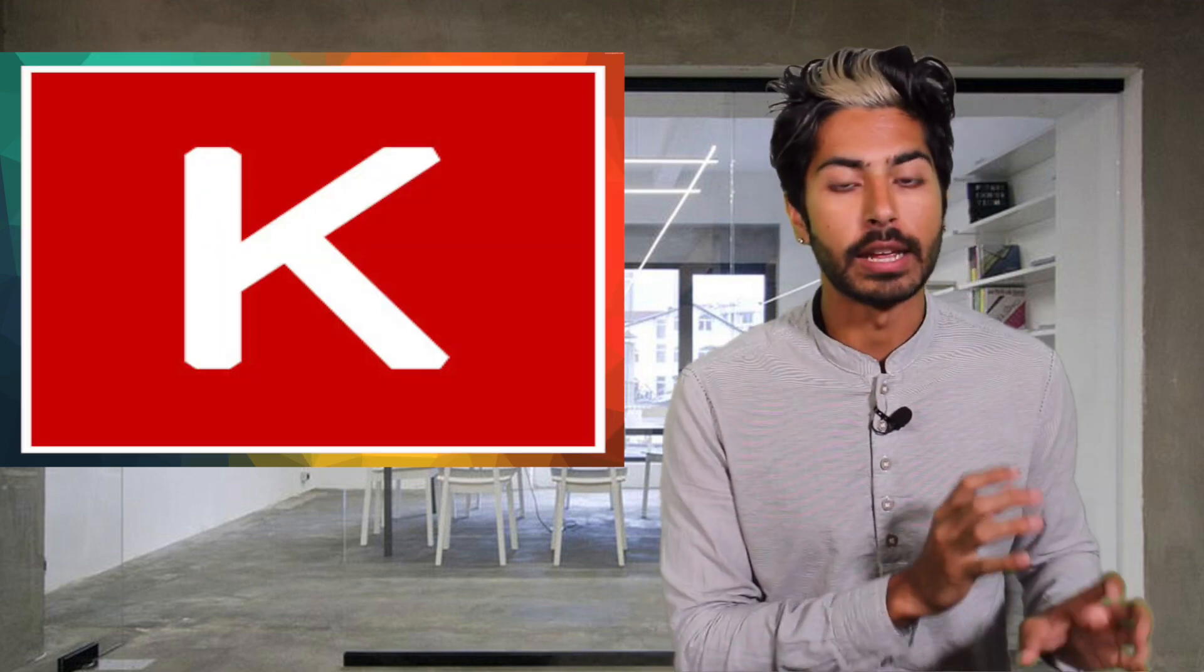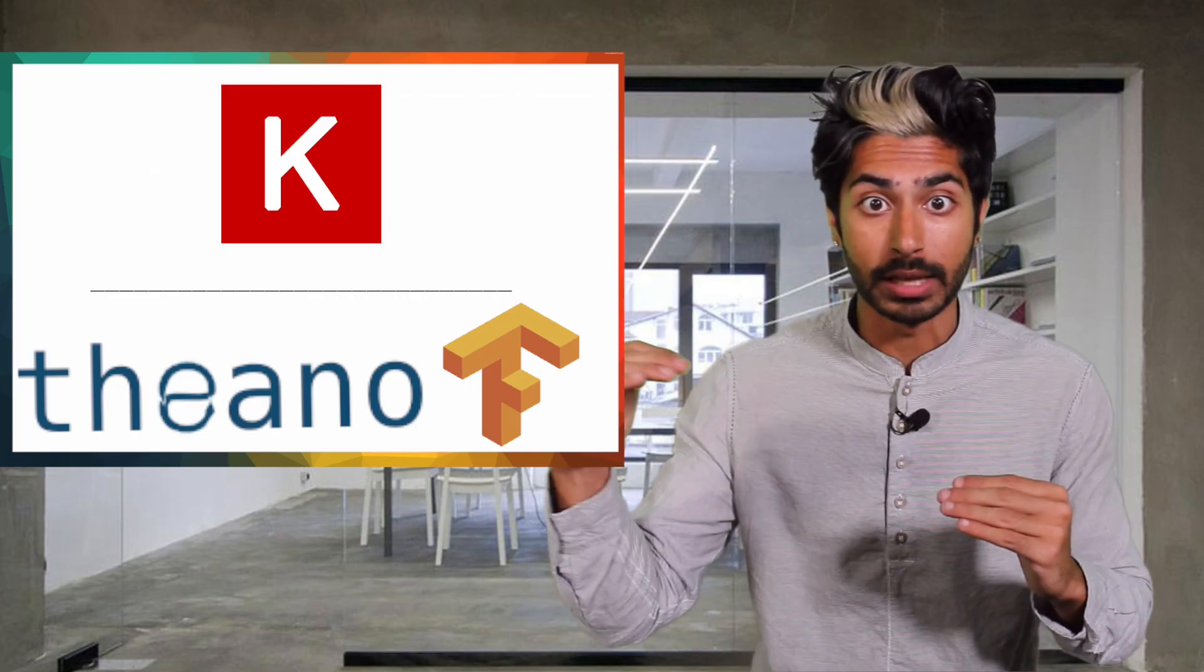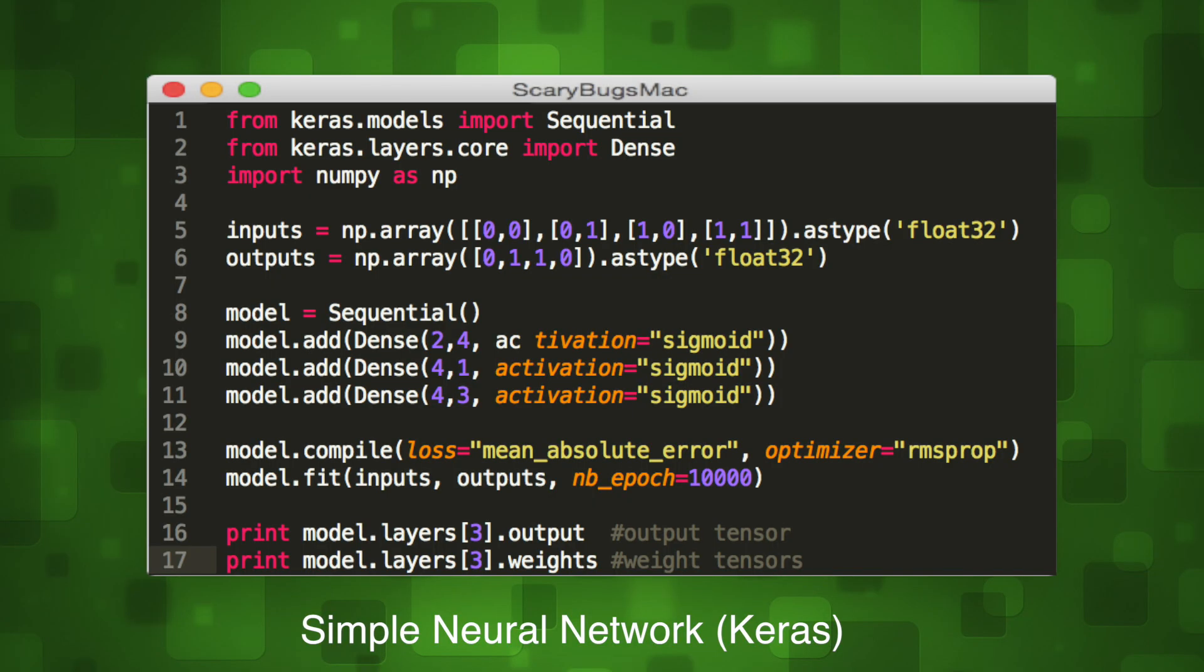But speaking of modularity, let's talk about Keras. Keras has been the go-to source to get started with deep learning for a while because it provides a very high-level API to build deep learning models. Keras sits on top of the other deep learning libraries, like Theano and TensorFlow. It uses an object-oriented design, so everything is considered an object, be that layers,